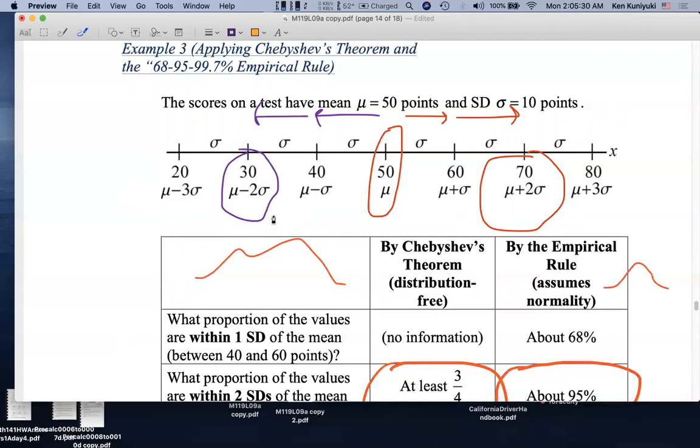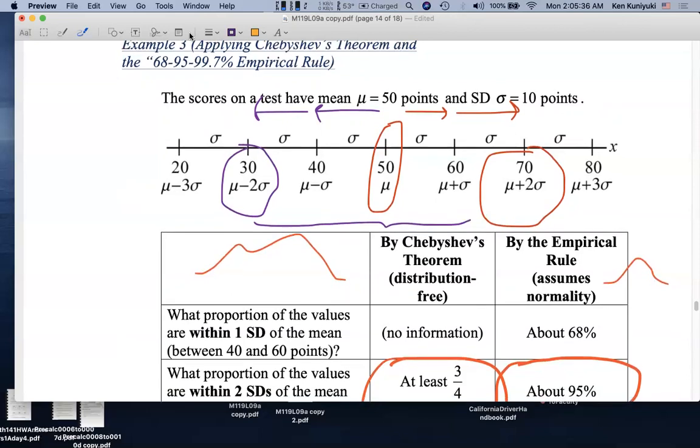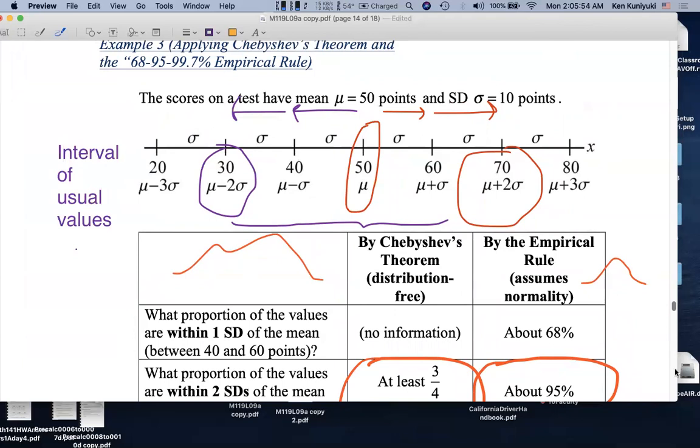So the range of usual values, the interval of usual values, would be from 30 points to 70 points. That would be our range, our interval of usual values, or typical values, from 30 points to 70 points, by the 2sigma or 2 standard deviation rule.